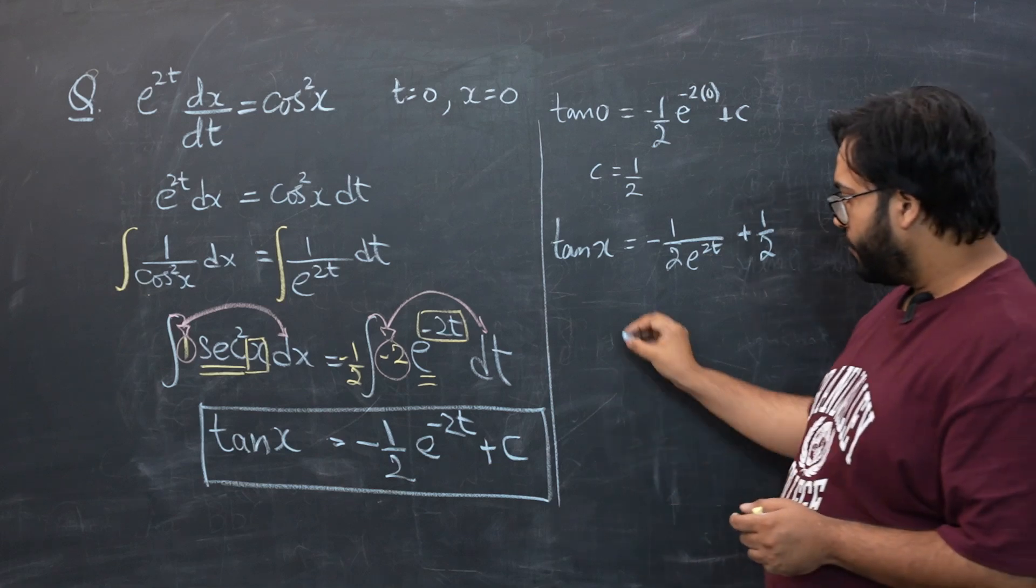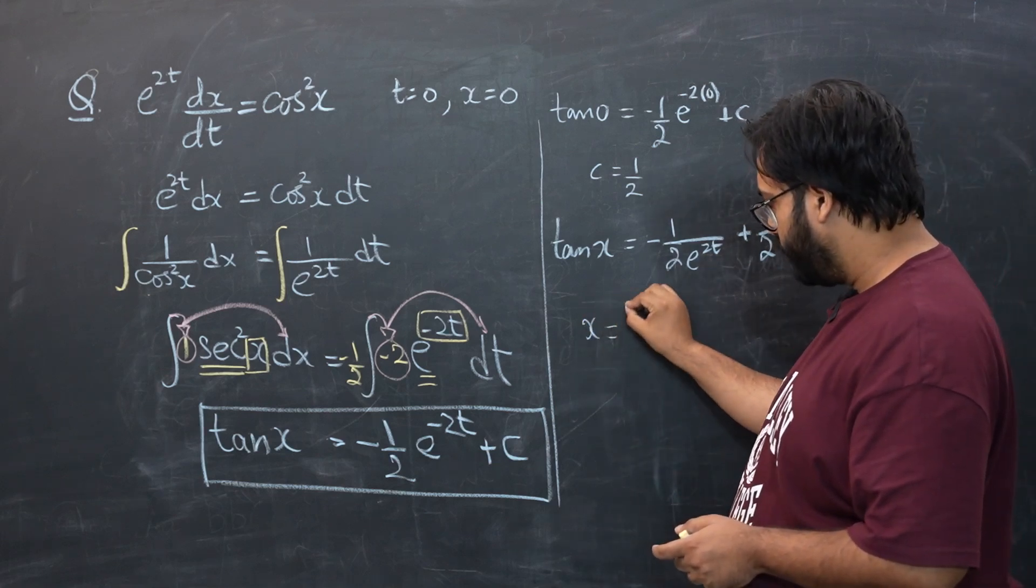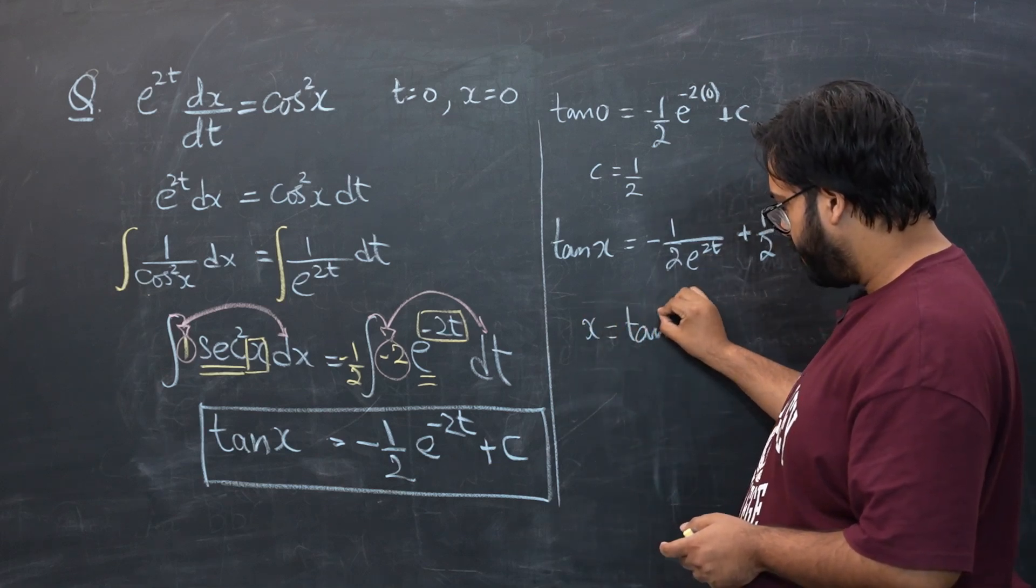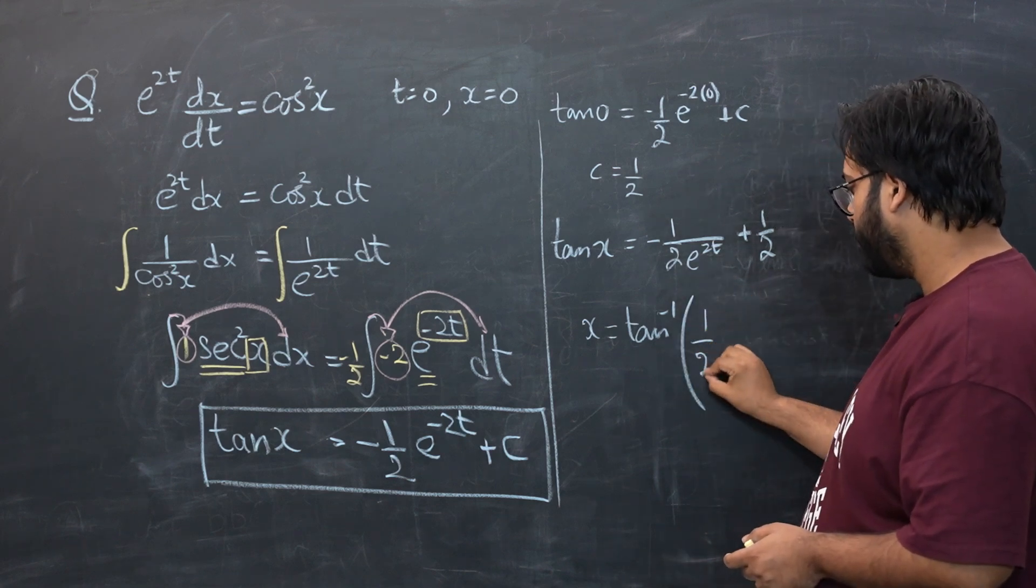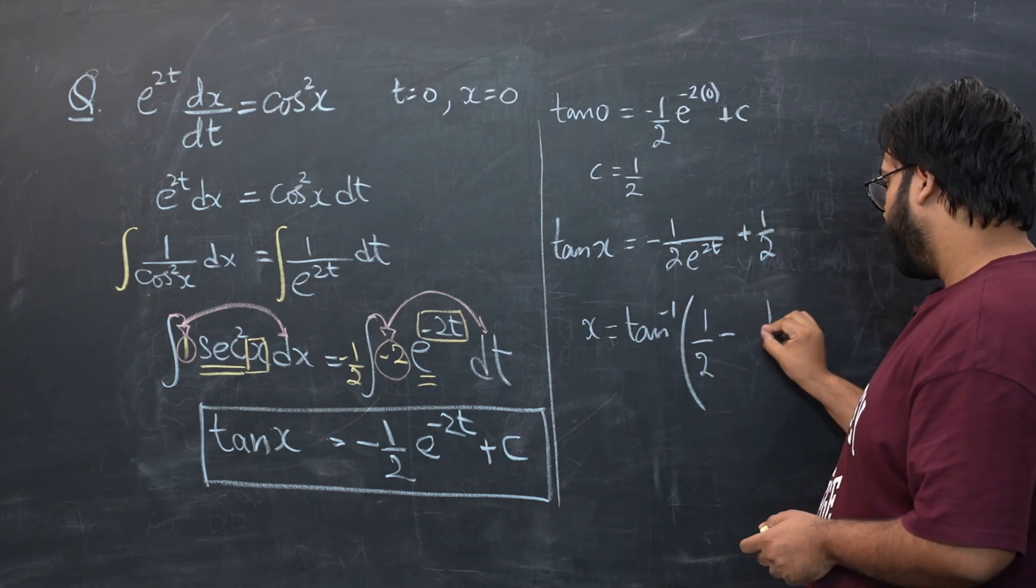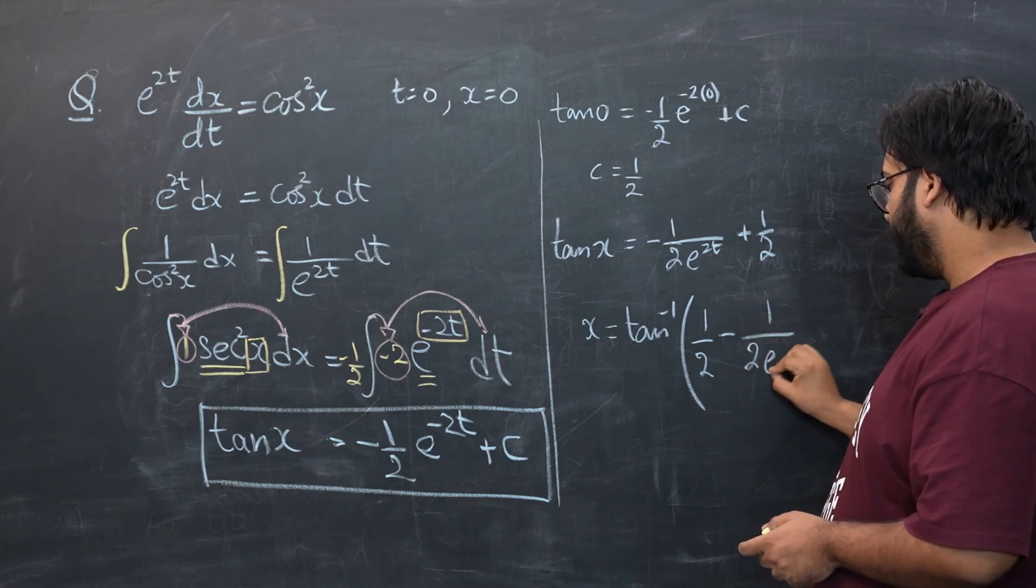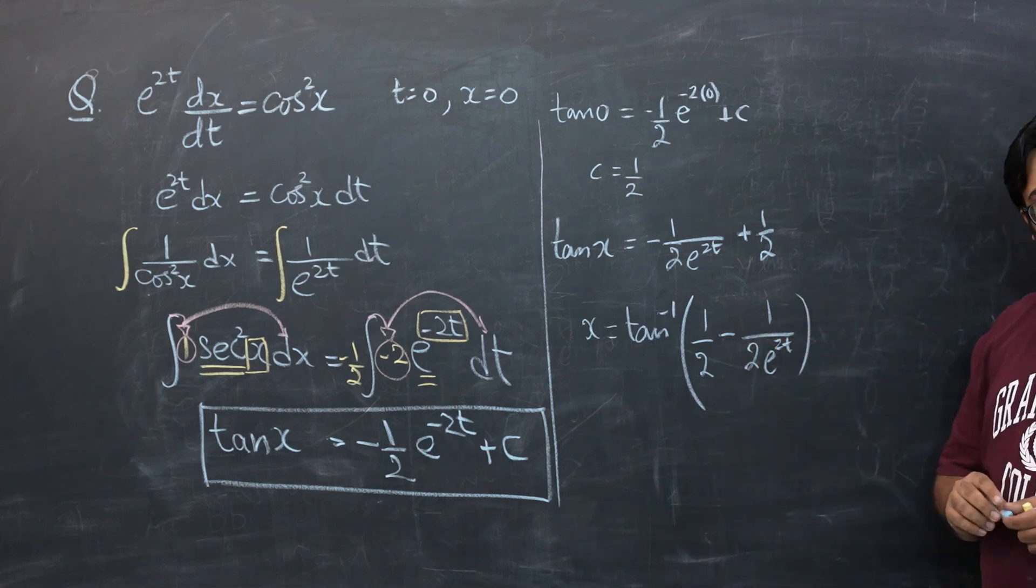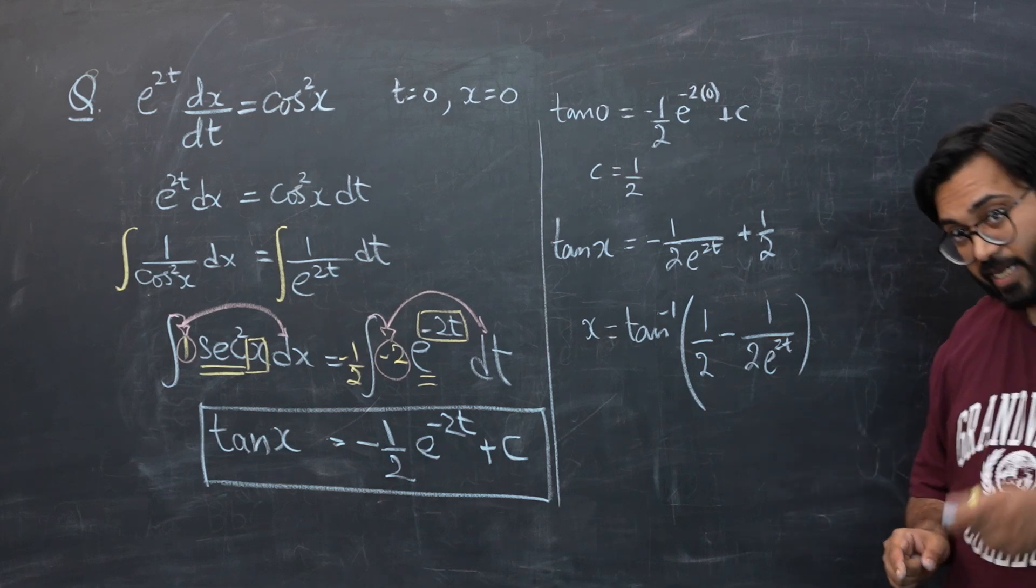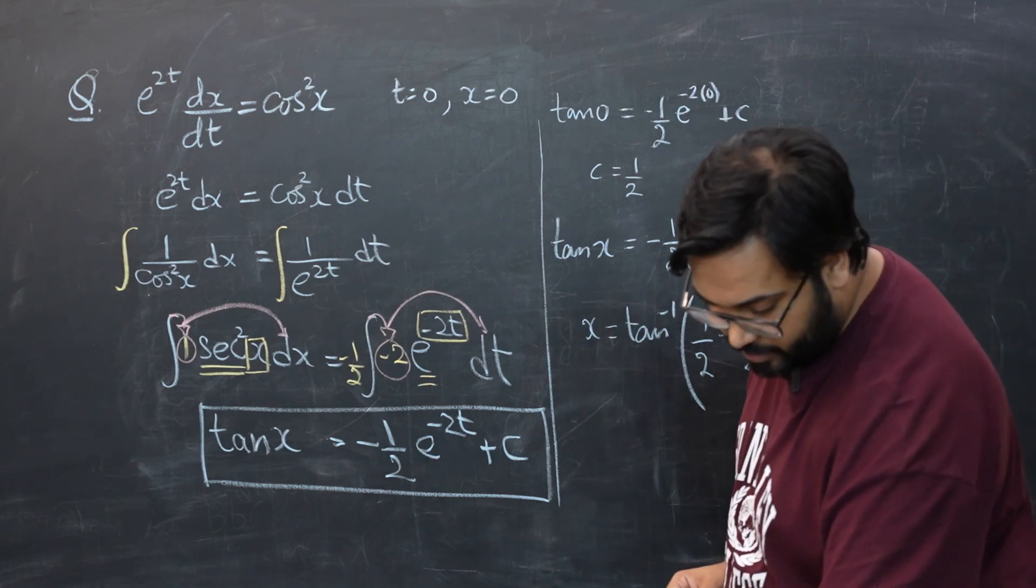Now for x we will have tan inverse of 1/2 e^(2t). So this is our final answer for the differential equation. Now for the second part, if you guys can see clearly, the question asks that what happens to the value of x when t becomes very large.